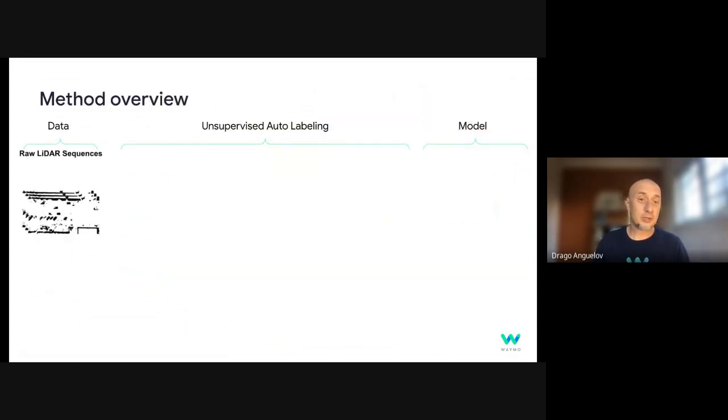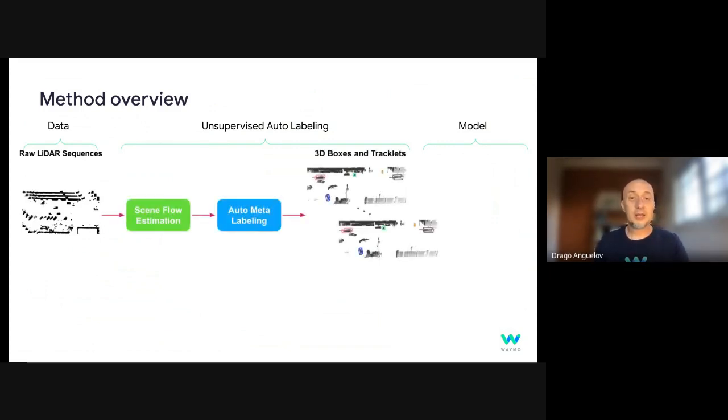So our specific method takes raw lidar sequences as input. And to obtain and supervise auto labels, we designed two key components: scene flow estimation, and then automatic labeling. Without human labels, we can estimate the 3D scene flow of every lidar point. Then in the blue box, we go through a series of clustering, tracking, shape registration to obtain object labels and 3D bounding boxes for these tracklets, which essentially creates automatic training data on which we can ultimately train 3D object detectors and also trajectory predictors for these objects.